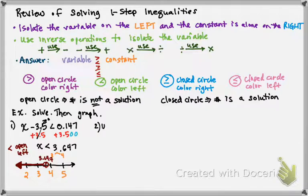Second problem, we have y plus 3 eighths is greater than or equal to 9 sixteenths. So the inverse of adding would be subtracting, so I'm going to subtract 3 eighths from both sides.